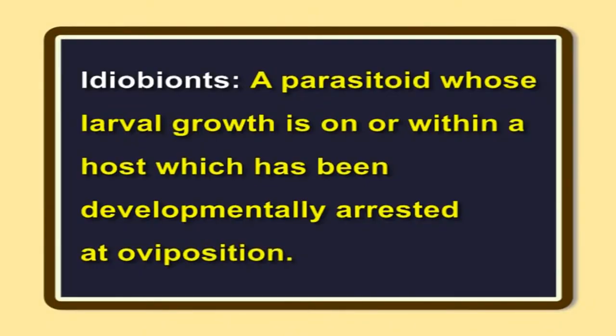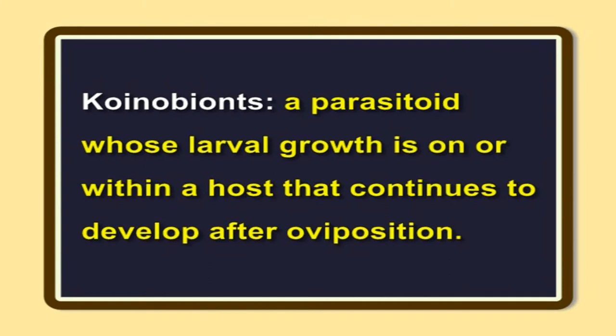Different types of parasitoids. Different groups have been defined within parasitoids depending on their lifestyle. Idiobionts: a parasitoid whose larval growth is on or within a host which has been developmentally arrested at oviposition. The host is usually relatively mature and concealed in a protected situation such as wood-boring larvae or cocooned prepupae or pupae. Idiobionts have a wide host range. Koinobionts: a parasitoid whose larval growth is on or within a host that continues to develop after oviposition. The host is often an early or mid-instar larva, exposed or weakly concealed. Parasitoid development accelerates after the host has spun a cocoon or constructed a pupation chamber. Koinobionts are usually host-specific.